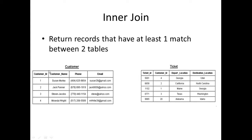The customer table has four columns: customer ID, customer name, phone number, and email. Whereas the ticket table consists of a ticket ID, customer ID, the park location, as well as the destination location.